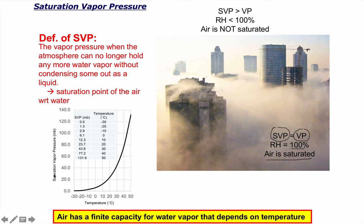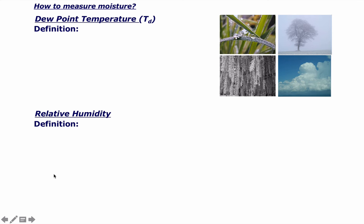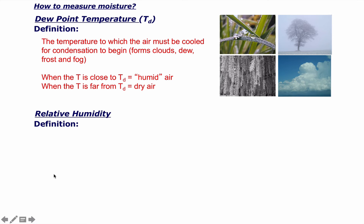What is the dew point temperature and what is relative humidity? Dew point temperature is simply the temperature to which the air must be cooled for condensation to begin. When you get condensation, you might make dew, clouds, frost, or fog. When the temperature is close to the dew point, the air is very humid. When the temperature is far from the dew point, the air is very dry. The dew point temperature can be found by cooling the air until you start to see condensation happening. You took the air temperature down to the point at which it became saturated.